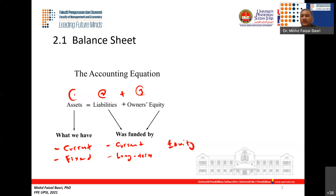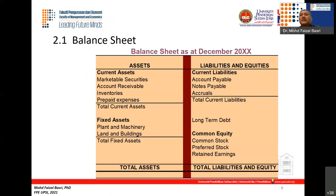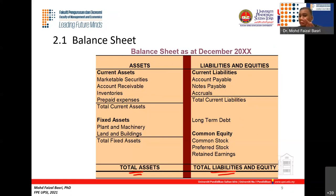Current assets are assets that can be converted into cash within one year. Any assets that take longer must be classified as fixed assets. For liabilities, similarly we have current liabilities and long-term liabilities. Current liabilities are obligations you need to pay within one year, within 12 months.